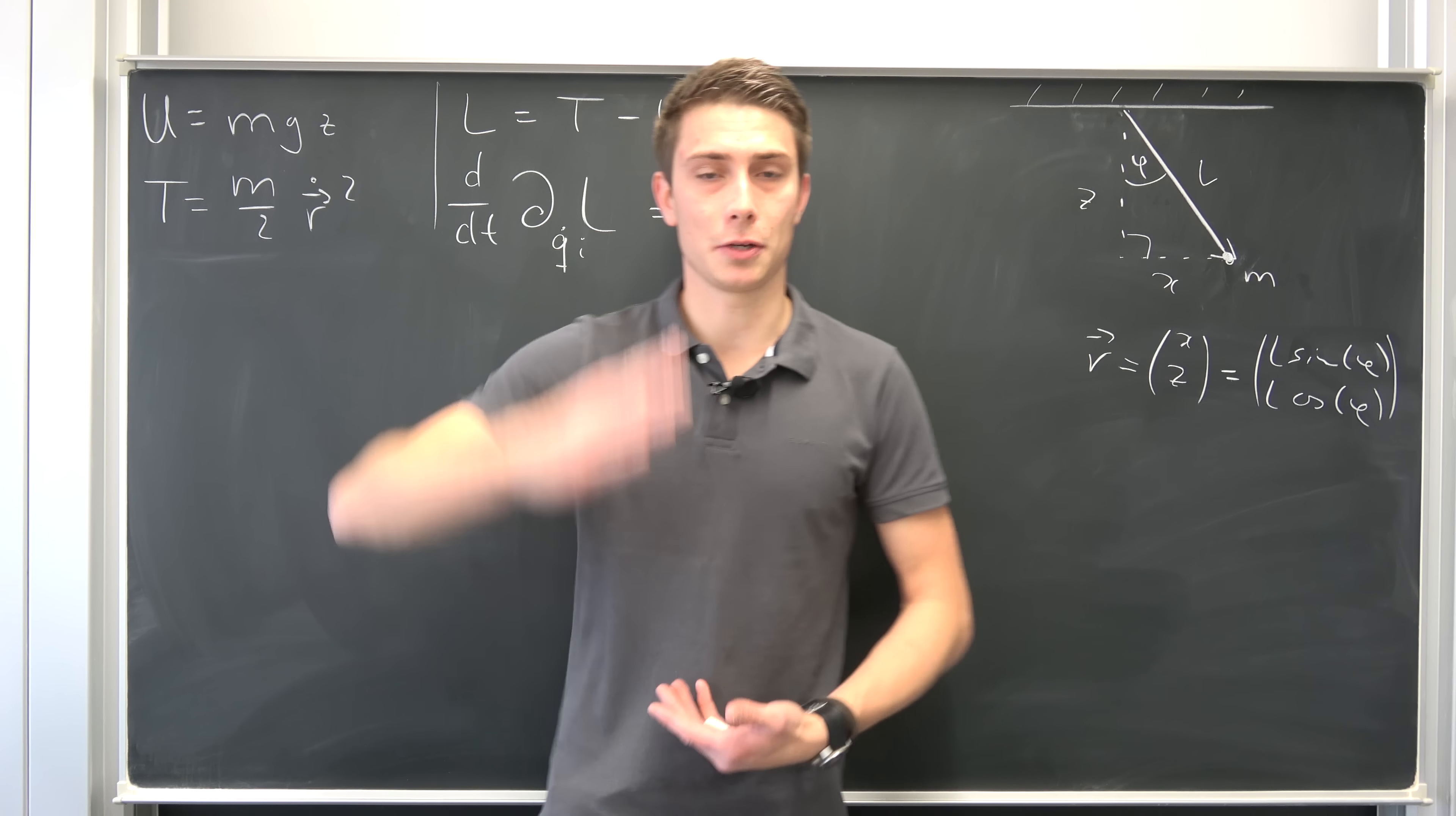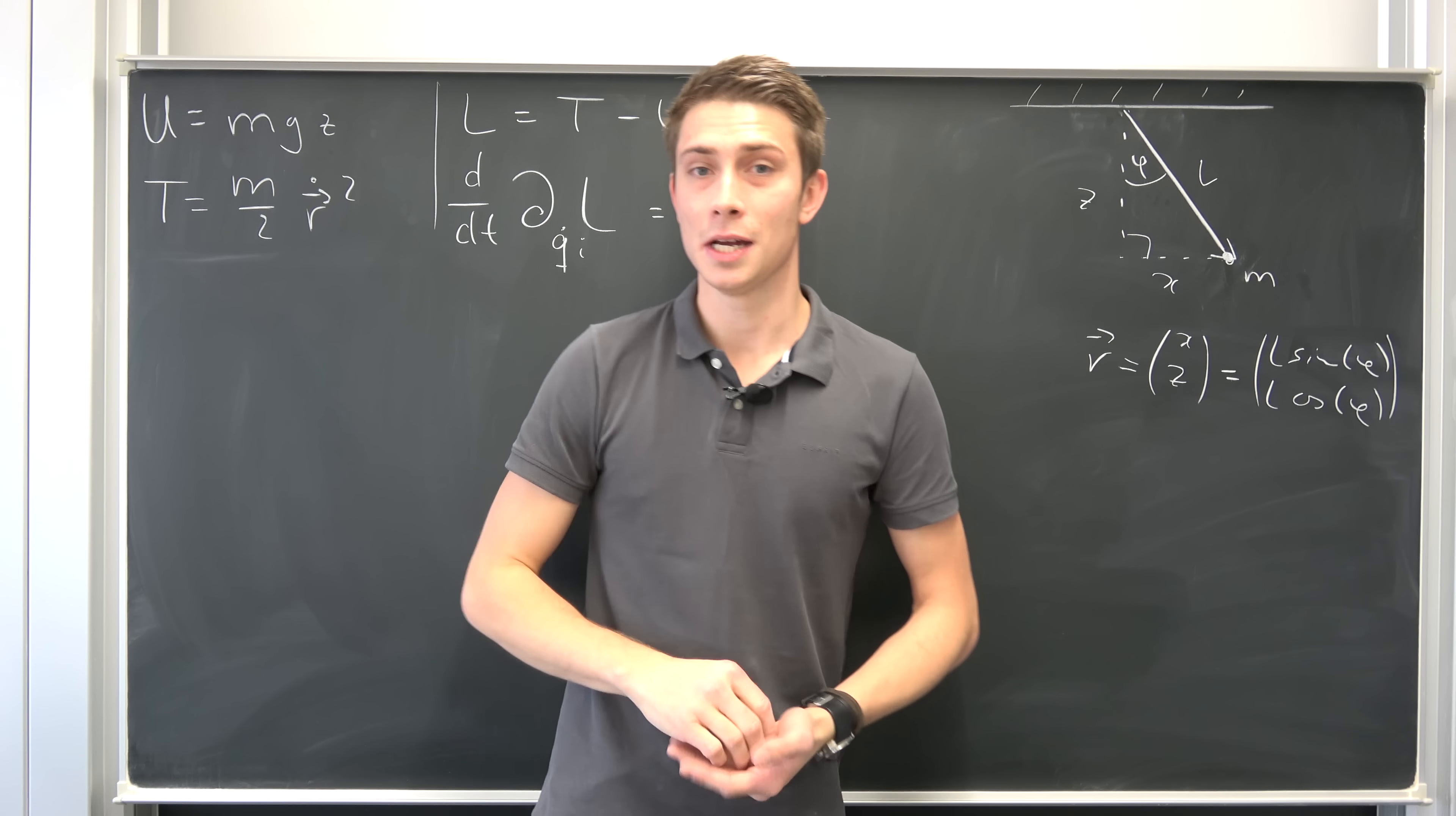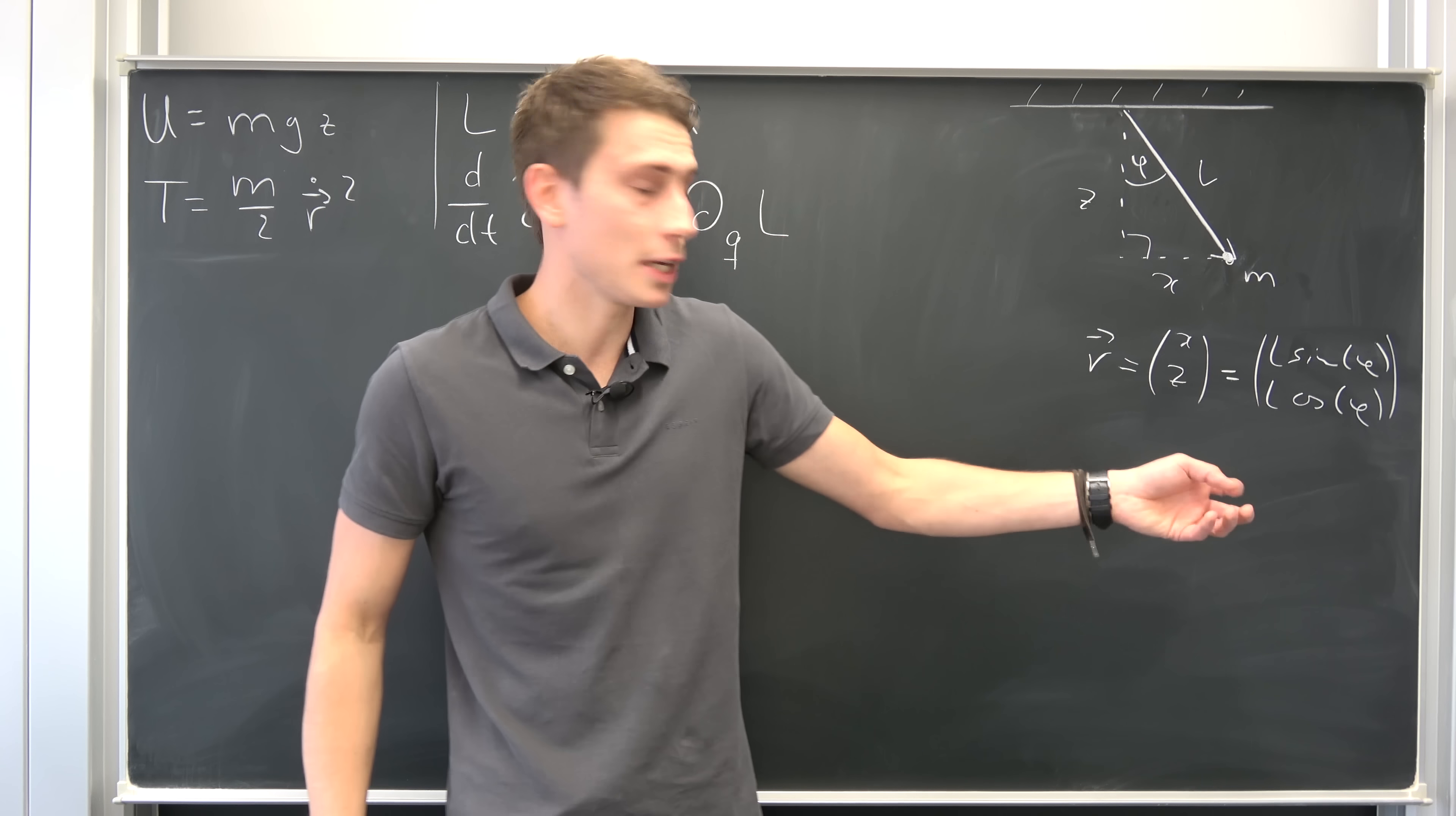And I want you guys to notice something really crucial because we have to differentiate with respect to time in the next step. Our phi right here is time dependent because the angle which is enclosed by our x axis and the string is going to change over time all the time. So we are going to have some kind of angular velocity in the end.